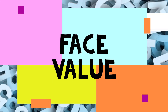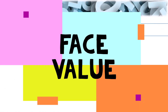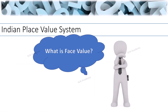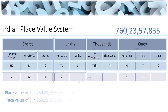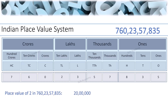Face value: the face value is the actual value of the digit itself. The face value of 6 is 6 itself. For another example, the place value of 2 in the same number is 20 lakhs, because 2 is placed in the ten lakhs position. The face value of 2 is 2 itself.